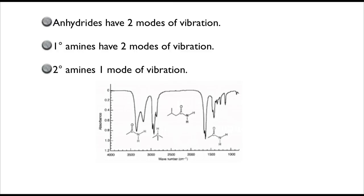Anhydrides have two modes of vibration. Let's look at the IR spectrum here on the screen. Anhydrides have two modes of vibration — when I'm referring to that, I'm talking about the carbonyl, the carbon-oxygen double bond vibration of an anhydride.